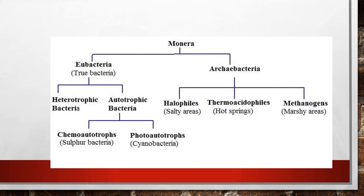The classification of Monera is based on the mode of nutrition. Monera is classified under two categories: one is Eubacteria, which is also called as true bacteria, and the second one is Archibacteria. Eubacteria in turn is classified under two categories: one is heterotrophic bacteria and the other one is autotrophic bacteria.